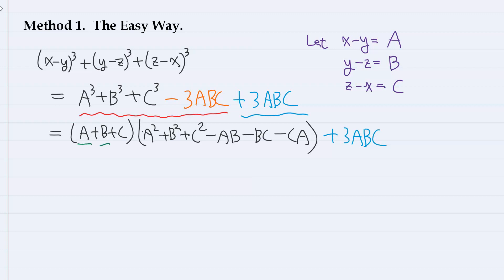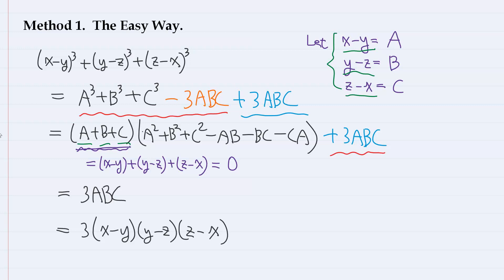But here, these A, B, and C are x - y, y - z, and z - x. So, their sum, A + B + C, is 0. Therefore, since this part becomes 0, we are only left with 3ABC, which is just 3(x - y)(y - z)(z - x). So, that was the easiest method.